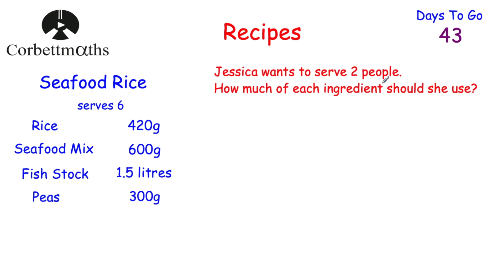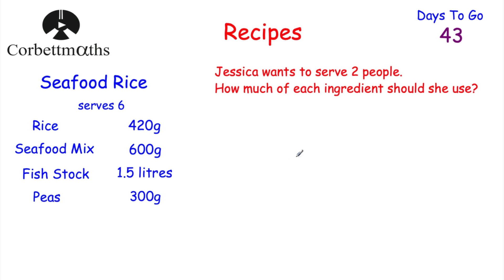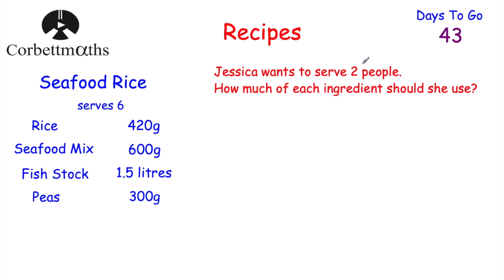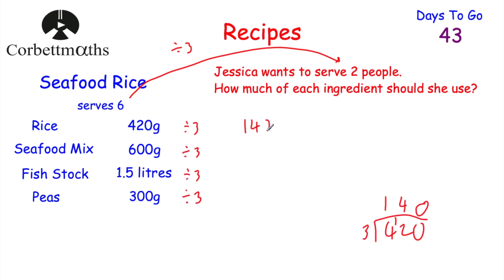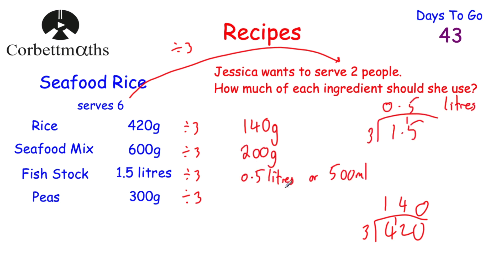This time she wants to serve two people. To get from six to two, we divide by three. Dividing each quantity by three gives us 140g of rice, 200g of seafood mix, 0.5 litres (or 500ml) of fish stock, and 100g of peas.